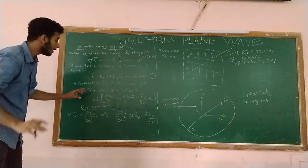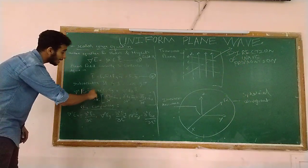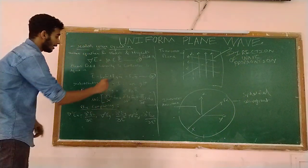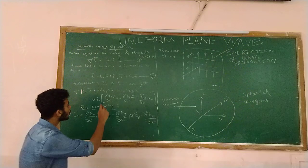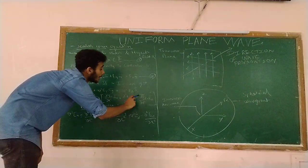Now, substituting 2 in 1, we get: del square Ex x-bar plus del square Ey y-bar plus del square Ez z-bar equals to mu epsilon times del square E. This gives us: del square Ex x-bar plus del square Ey y-bar plus del square Ez z-bar equals to mu epsilon times the respective field components.